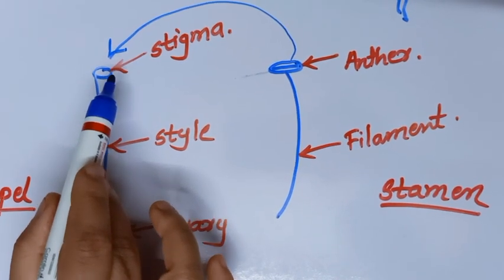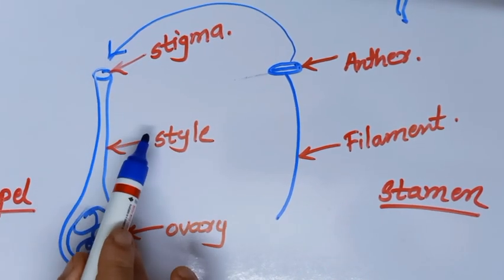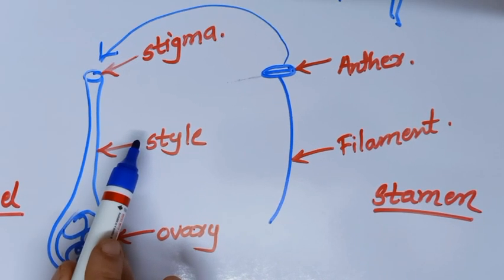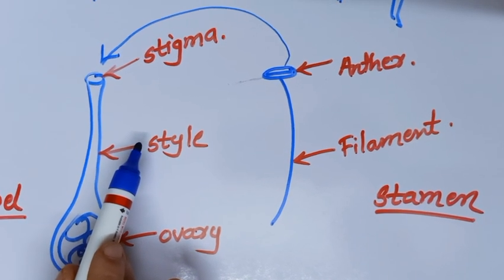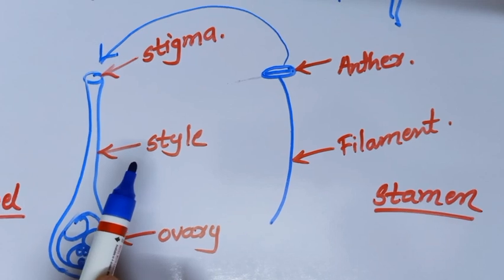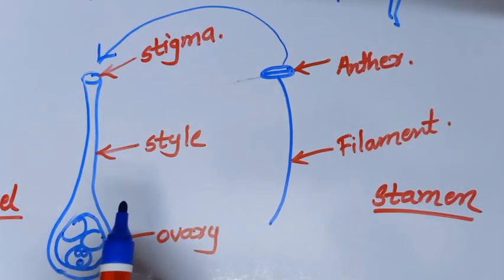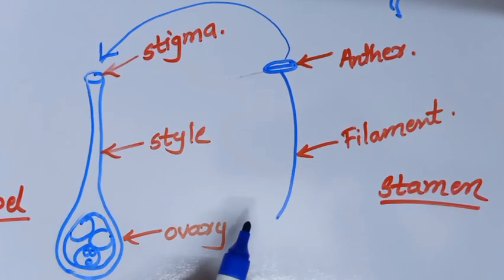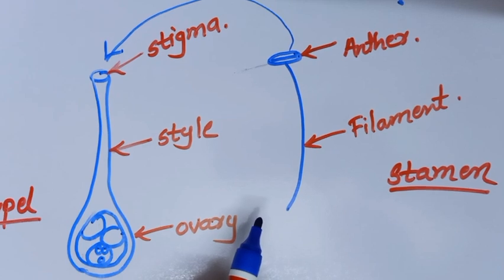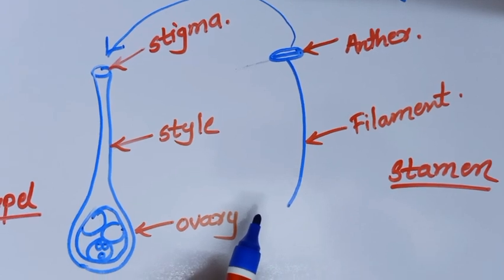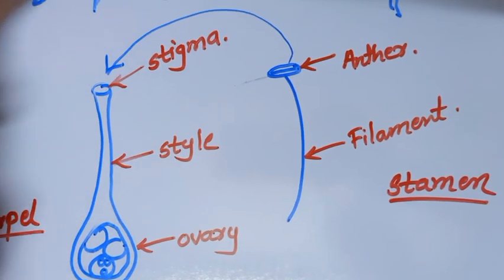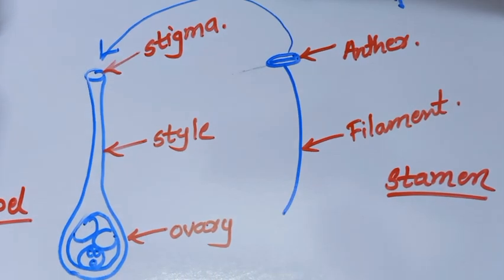This pollination is of 2 main types. In your textbook, 2 types are given, but actually they are of 3 types. The first type is self-pollination and the second one is cross-pollination. First, we will see self-pollination.